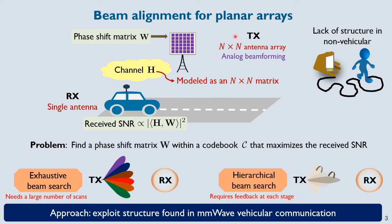Here is a typical vehicular communication setting where the transmitter mounted on a roadside unit is equipped with an N x N planar antenna array. We assume an analog beamforming based architecture at the transmitter and a single antenna receiver for simplicity. The channel between the two ends is modeled by a matrix H which is of size N x N. When the transmitter applies a phase shift matrix W in this beamforming architecture, the receiver sees an SNR that's shown here. The goal of beam alignment is to find the best phase shift matrix at the transmitter that maximizes the received signal.